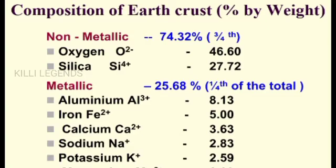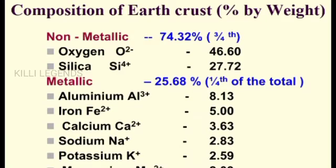The elements are classified as non-metals and metals. Non-metals include oxygen at 46% and silica at 27% — these are the most abundantly distributed. Followed by metallic components: aluminum, iron, calcium, sodium, potassium, and magnesium. So the most abundant element is oxygen, followed by silica, aluminum, iron, calcium, and sodium.